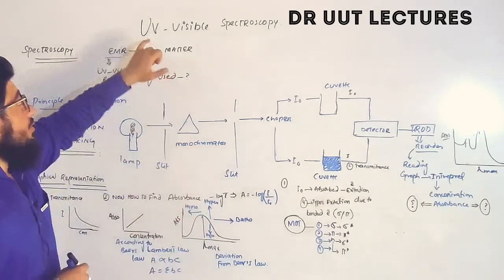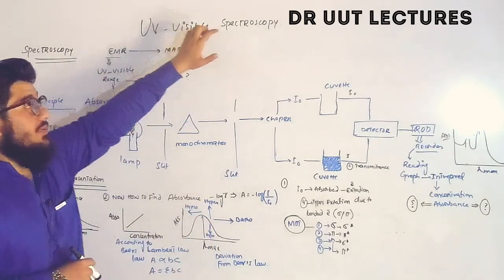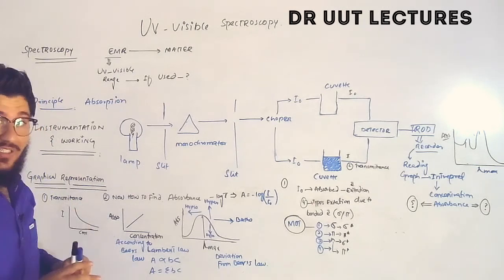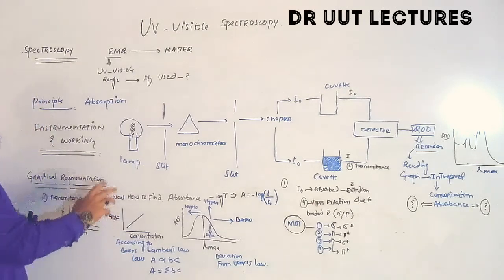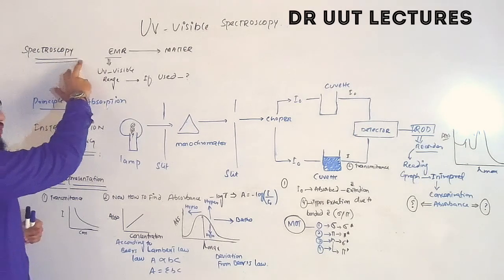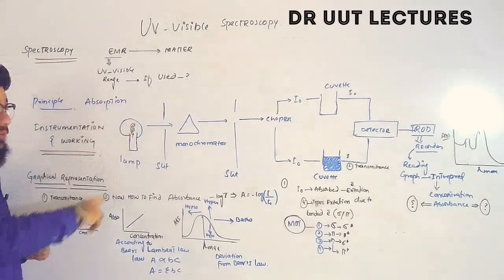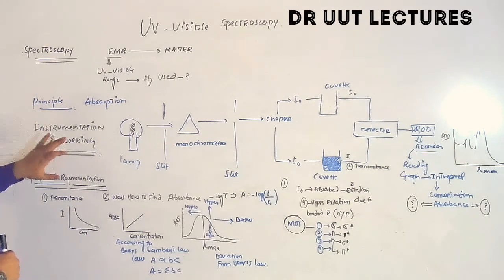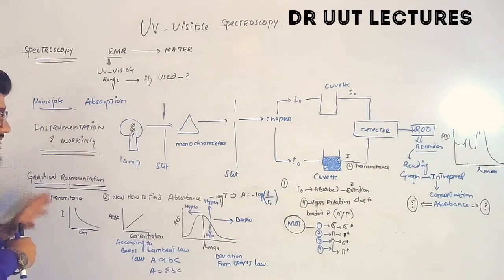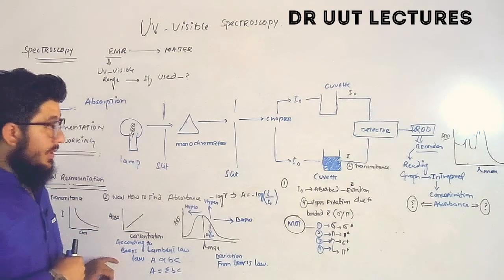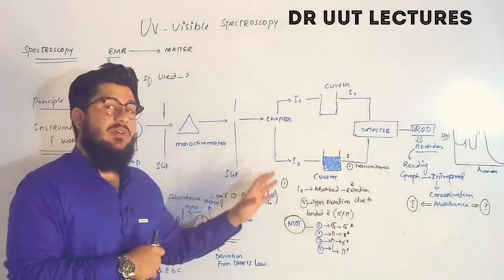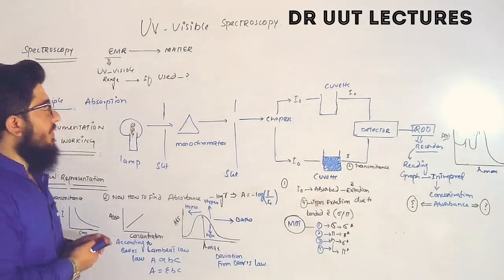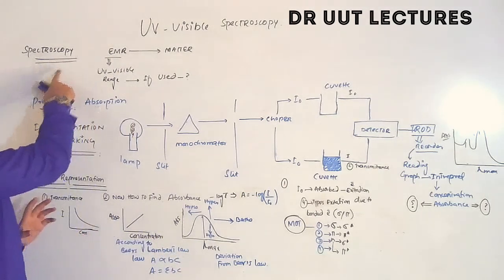In today's lecture we will talk about UV visible spectroscopy. The points we will discuss are the introduction, definition, principle, instrumentation, working, graphical representation, Beer-Lambert law, and the transitions. Let's start from the very first point — spectroscopy.